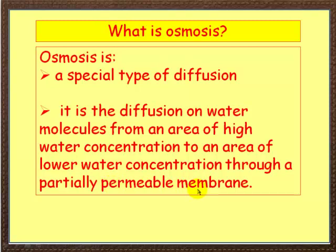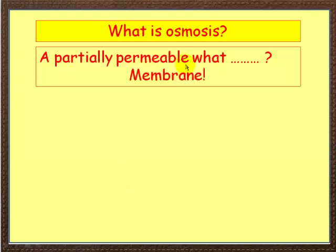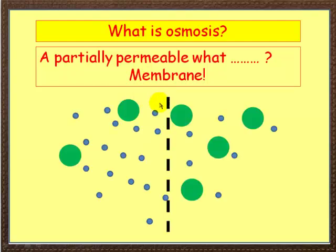Read that again and make sure you fully understand it. A partially permeable membrane — now, in some books you may see this as partially permeable, other books semi-permeable, and in other books differentially permeable, but it all means the same thing. It's a membrane that has got little holes in it. Imagine a tea bag with little holes, little perforations.